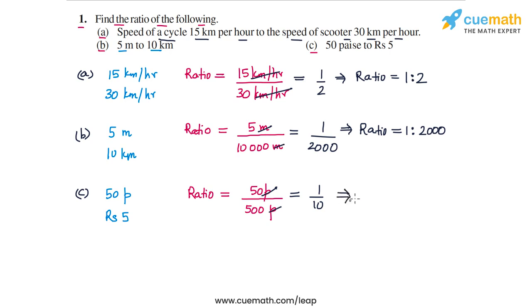The ratio of these two quantities can be written as 1 is to 10. This is the answer to part C, and with that all three parts of question 1 are done.